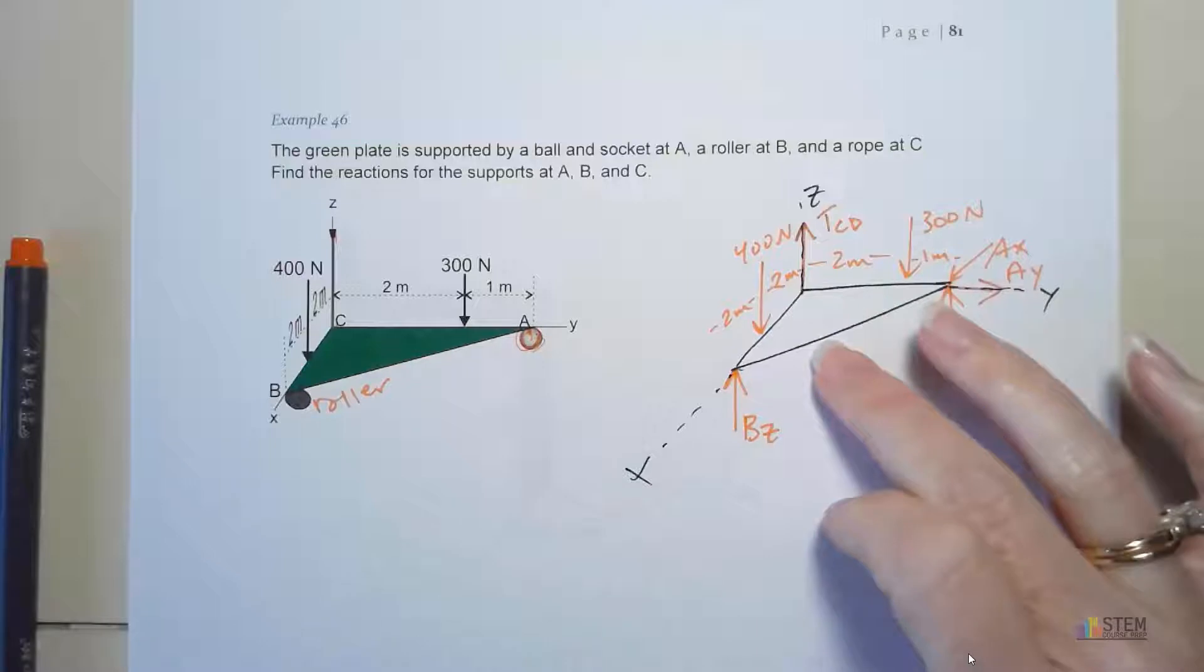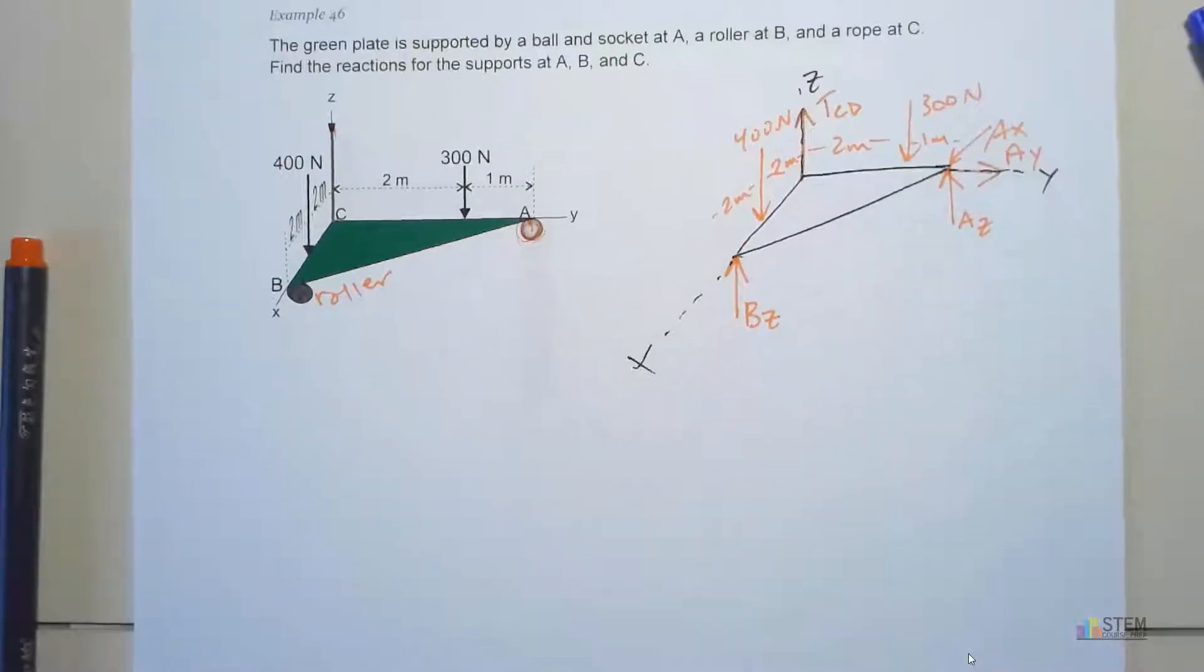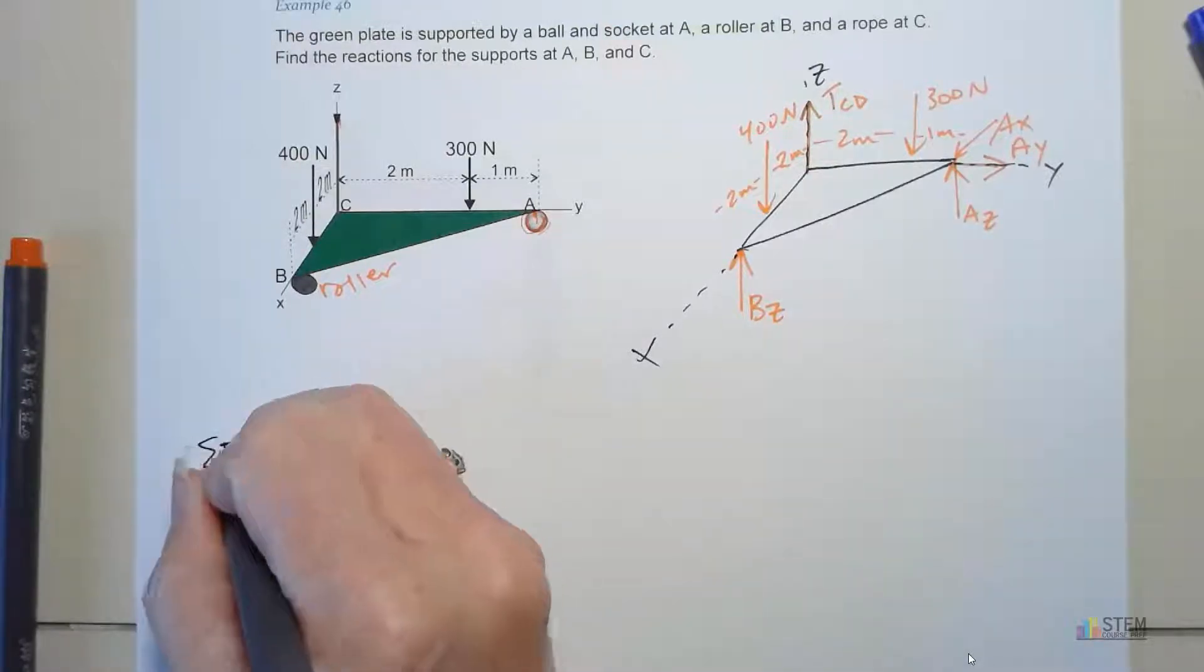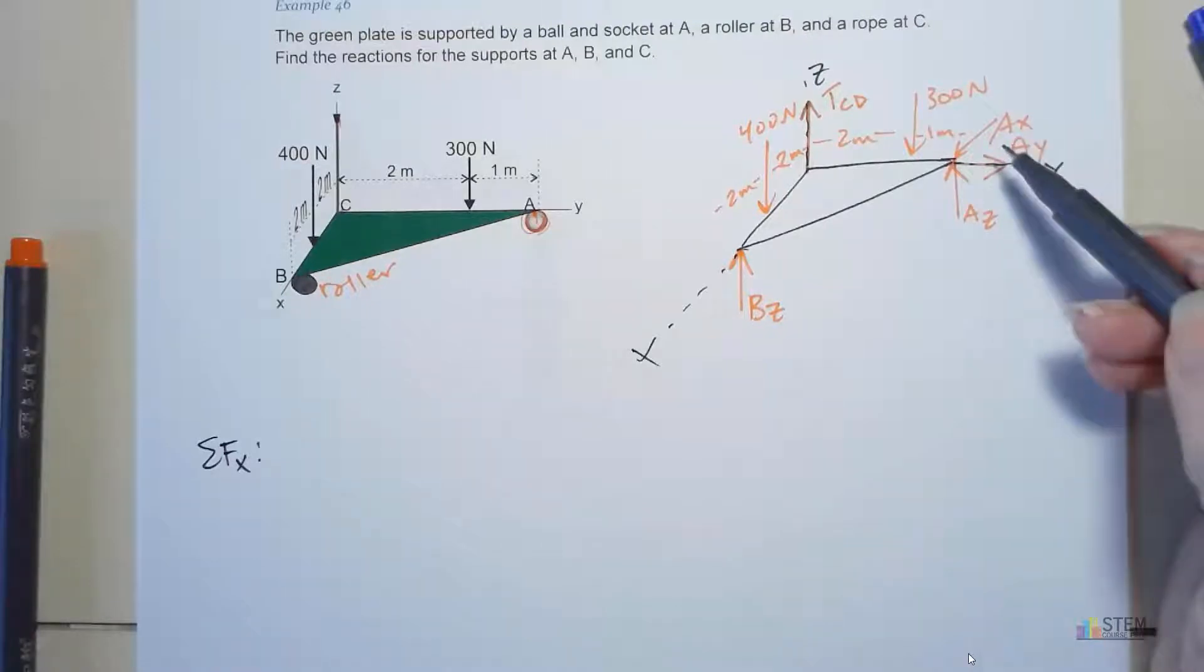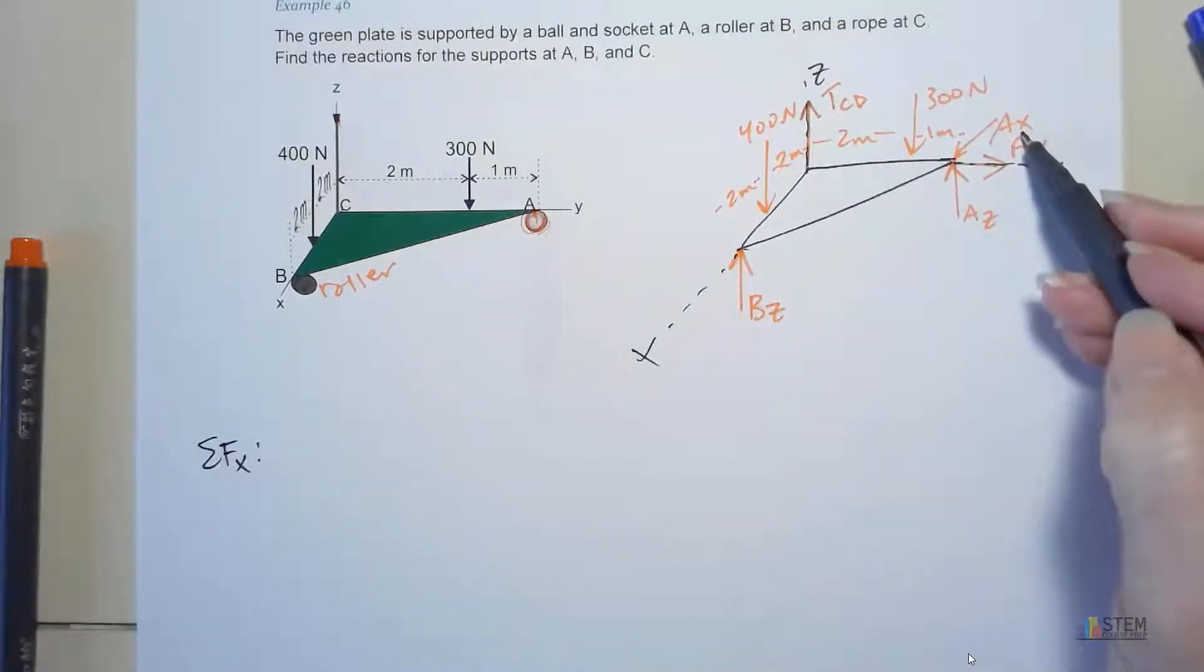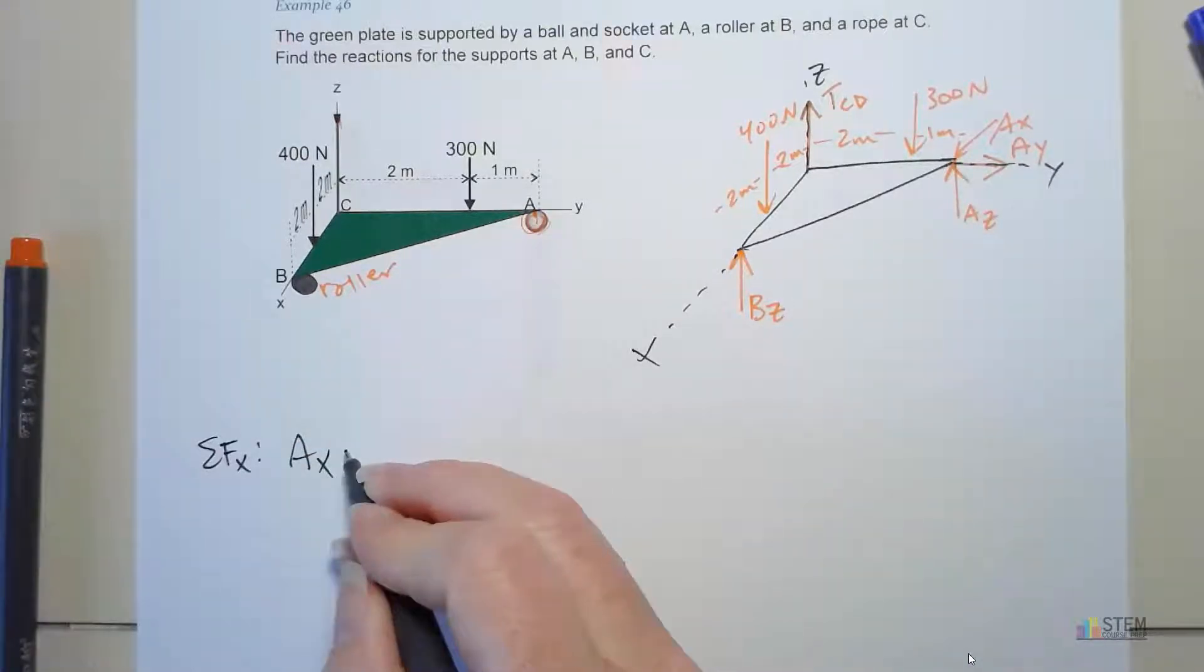If we pick the wrong direction, we'll know in the end because we'll get a negative. We weren't given the mass or weight of this plate, so we're just going to ignore the weight at this point. Let's get our equilibrium equations. We're going to sum up the forces and then do the moments. Let's do the X components first. This is X in this problem. We've got AX, that's positive. That's the only X component we've got, so this is going to be zero.